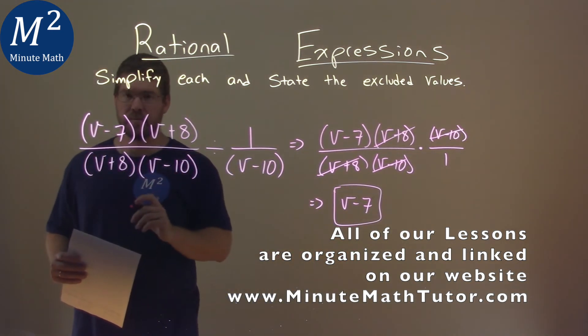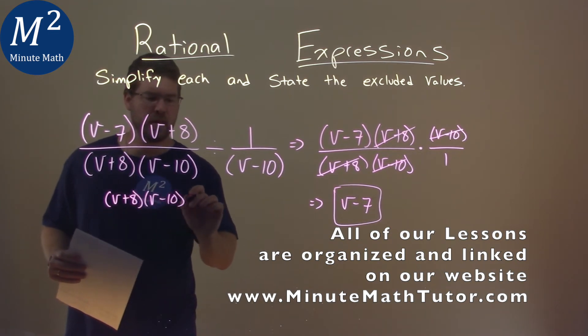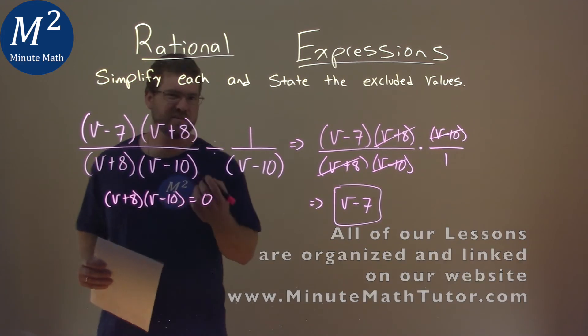So the only thing we're really focused on is right here, the v plus 8 and v minus 10. So we set that equal to 0, v plus 8, v minus 10 here. We set it equal to 0, and then we'll need to solve.